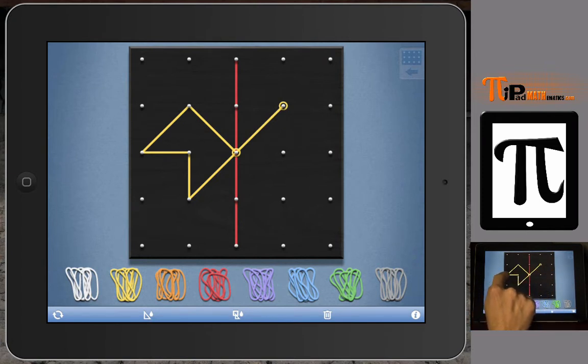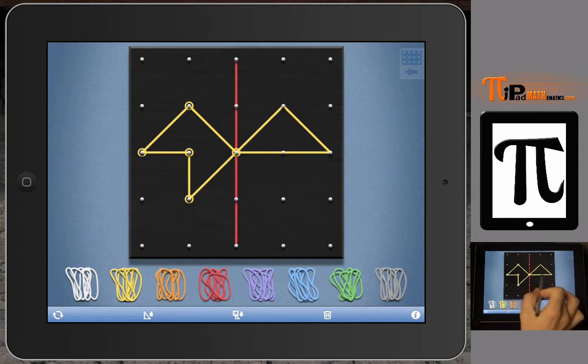This point here is going to be reflected two units, one two units from that point of intersection with the line of reflection. And then this point here is just one unit over so it goes to that spot. And then this point here is going to be one unit on the other side so we bring it up and then we bring it down here.